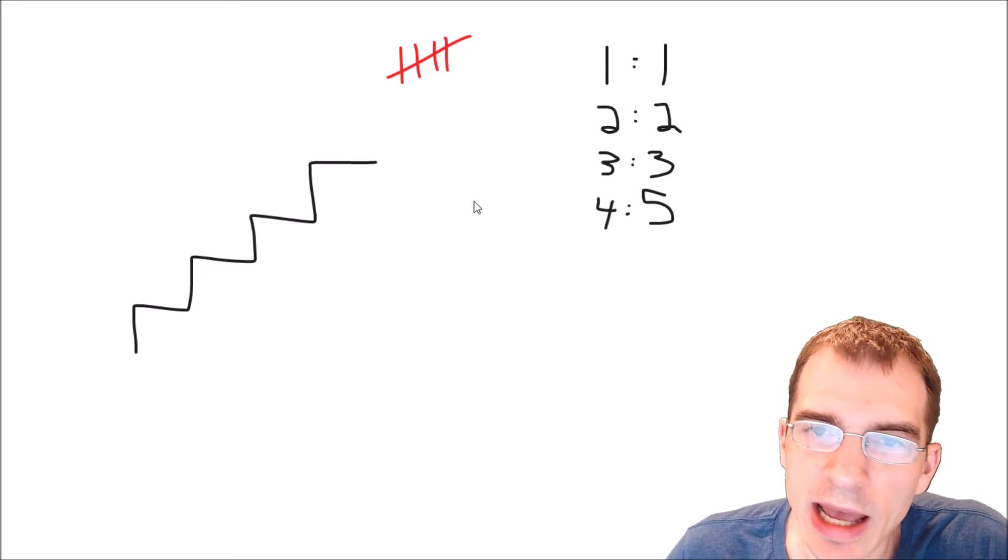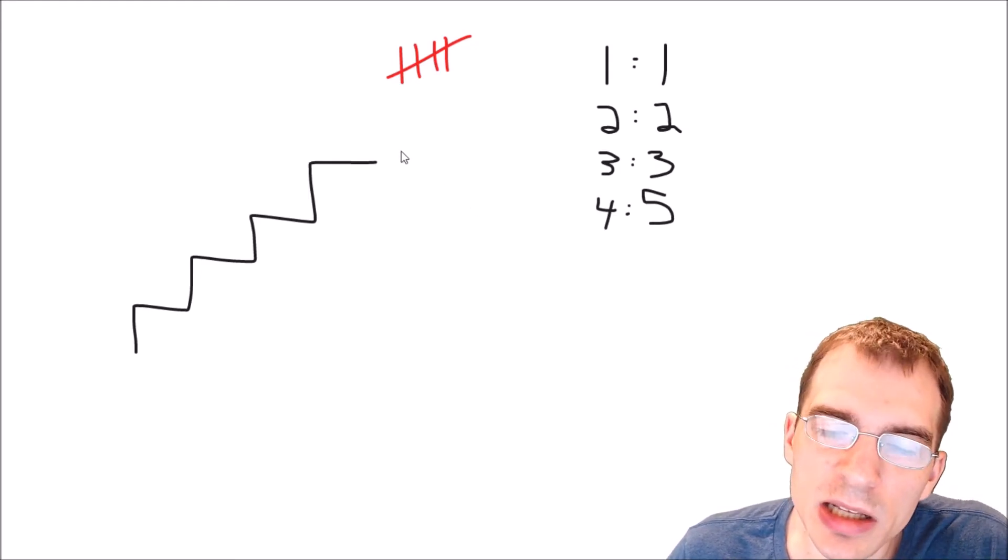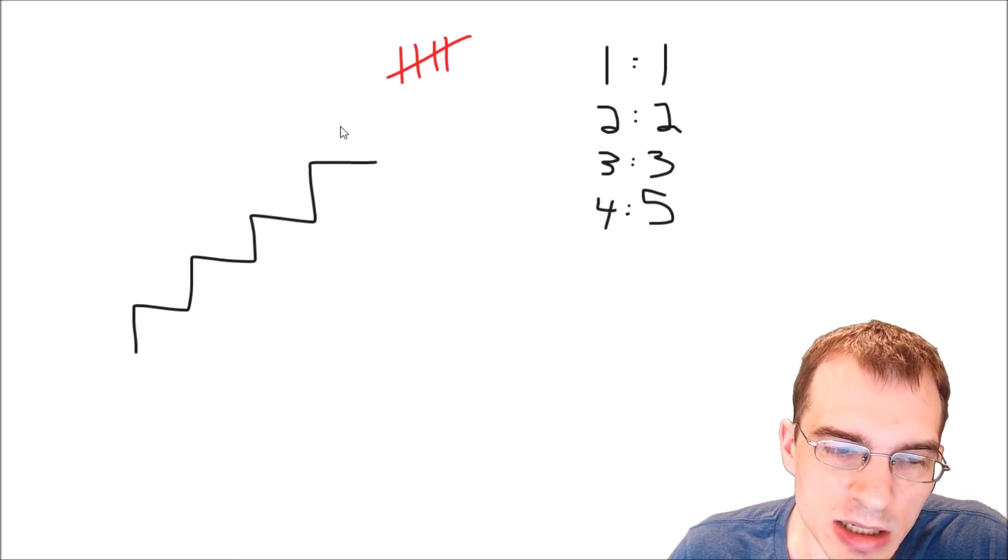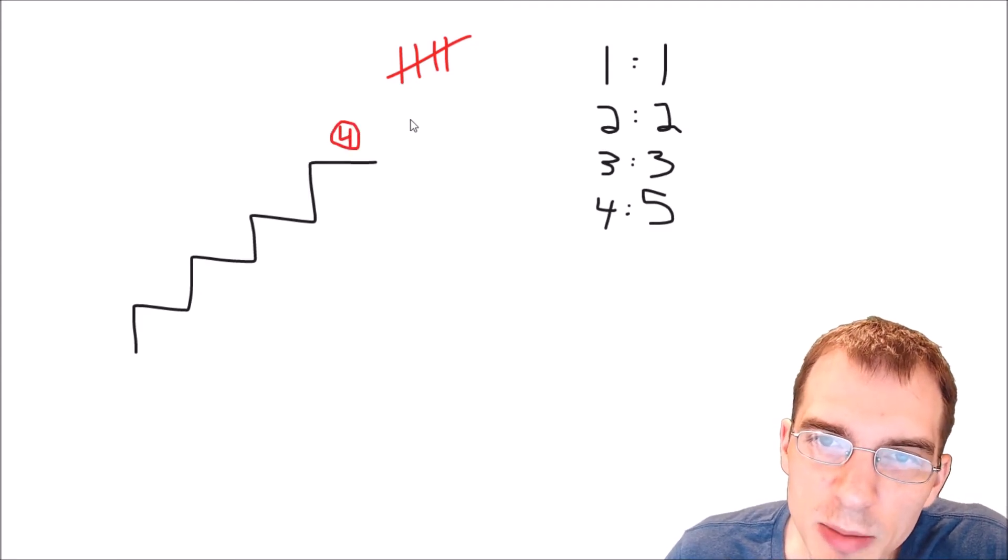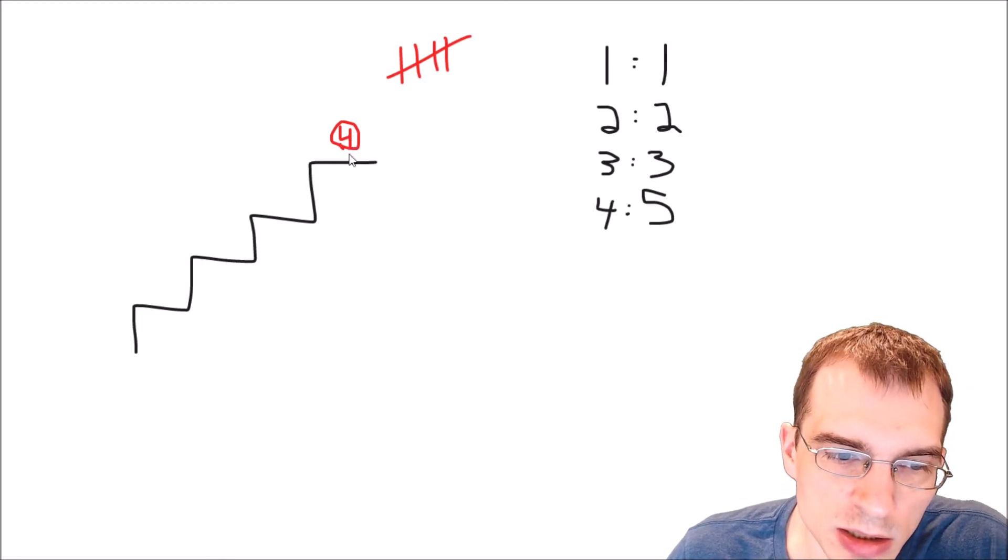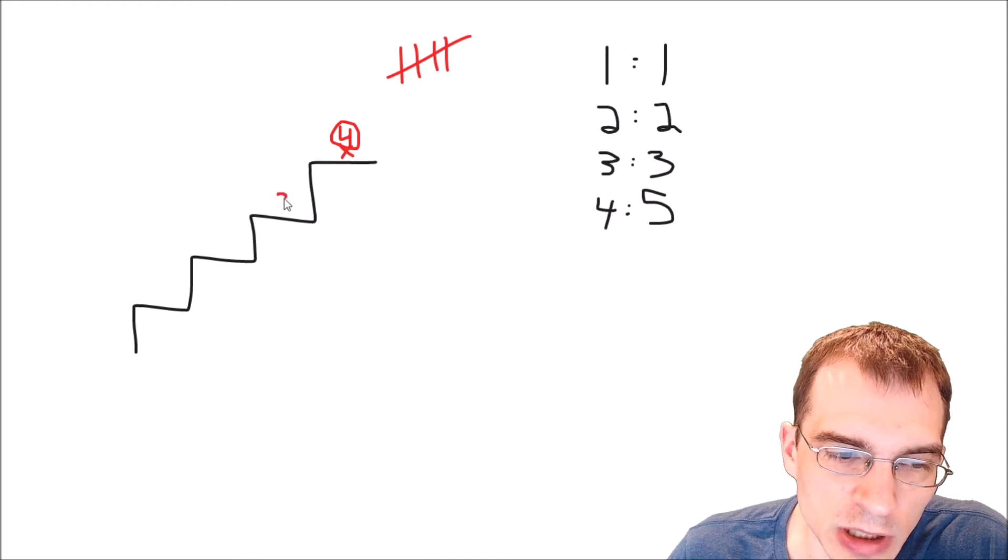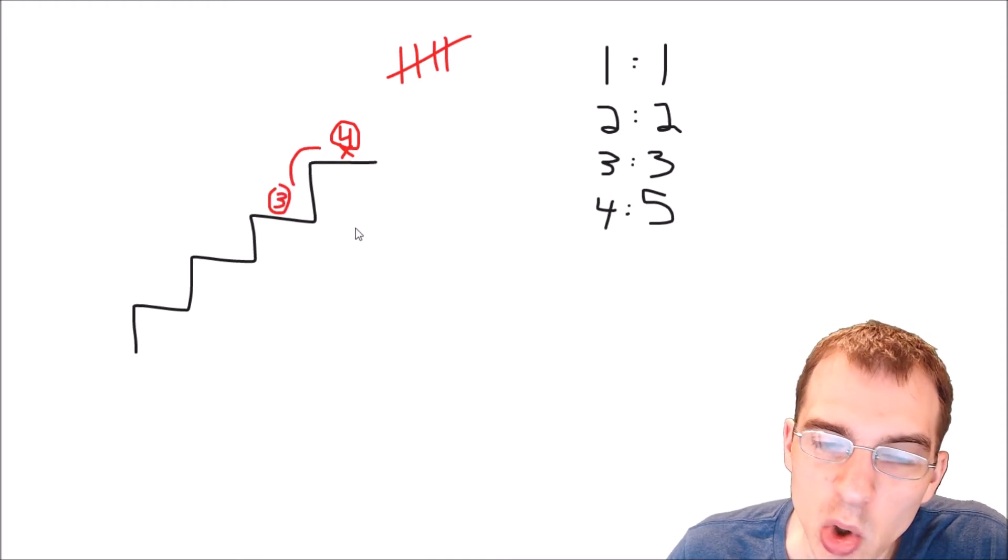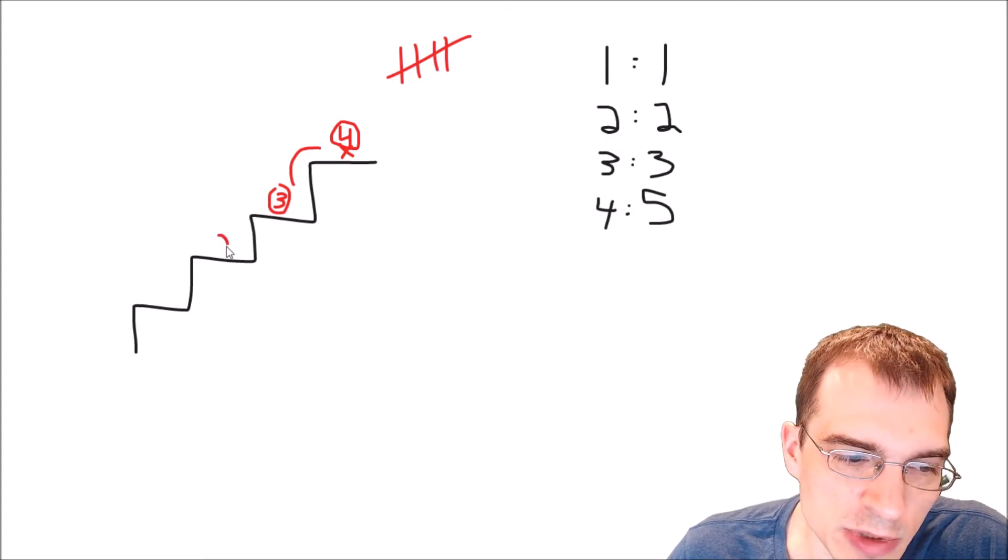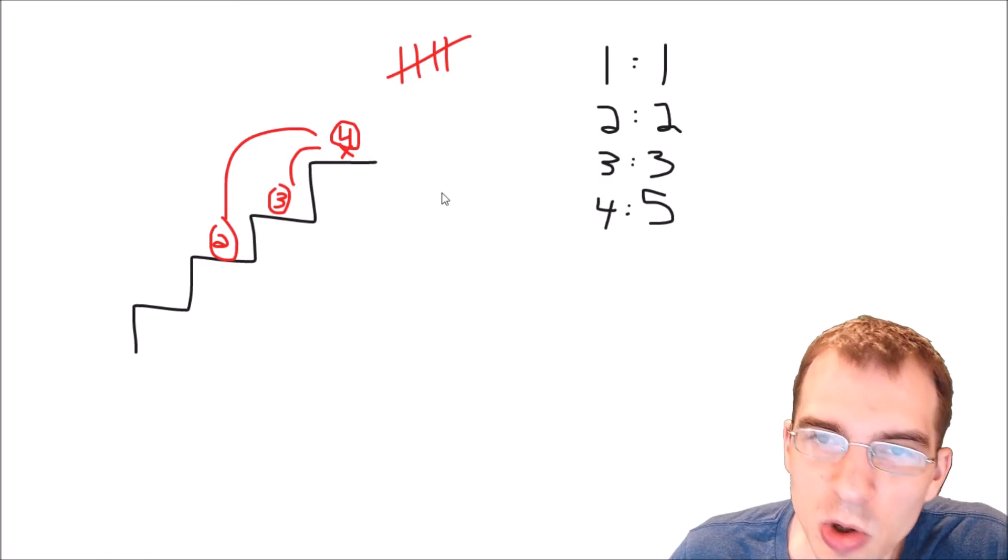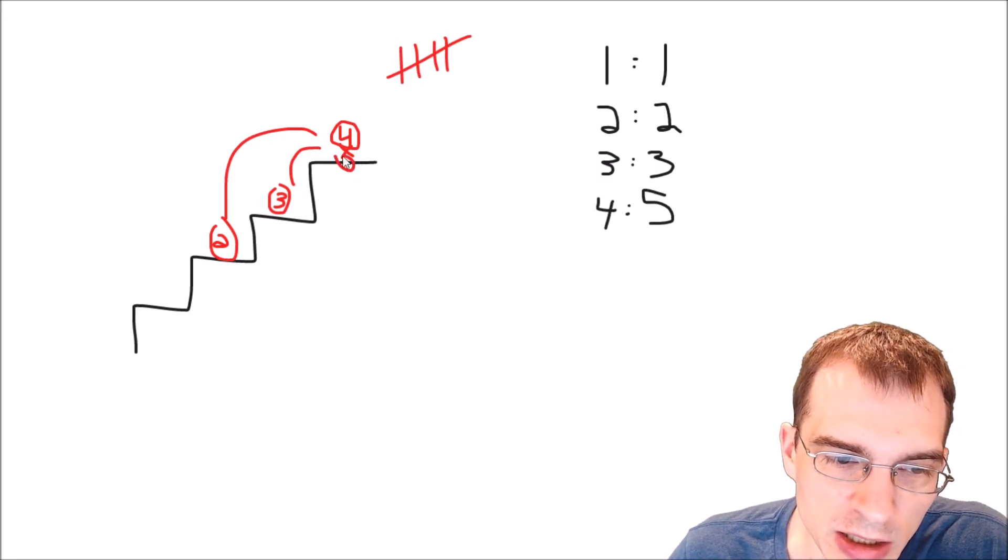And the key insight to have here is that for any size staircase, in this case, the four size staircase, to get to the top, there's only two ways that we can get to this fourth stair. We can either get there from here, the third stair, and take one step, or we can get there from the second stair, and then take the two step jump. Those are the only two ways that we can end on this final stair.